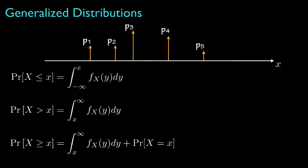And if we include equality at the point x, we'll need to add in the probability that the random variable takes that particular value, which, for example, would be equal to P3 if the point x corresponds to the location of the third delta function.